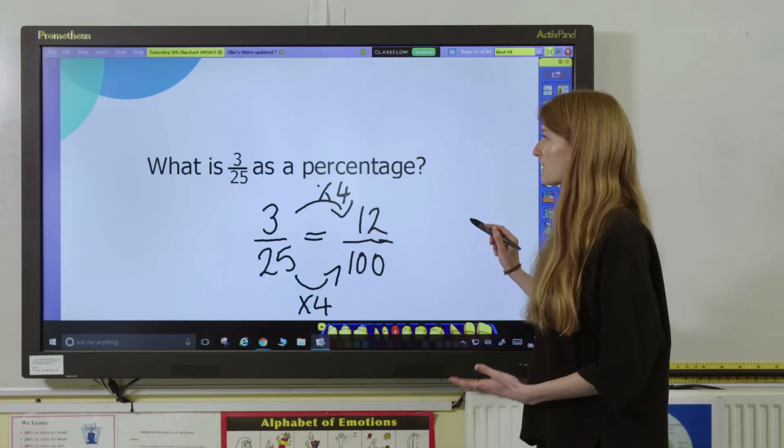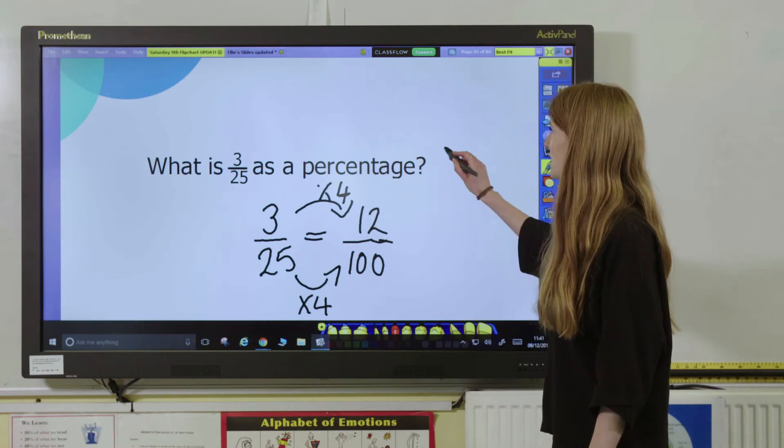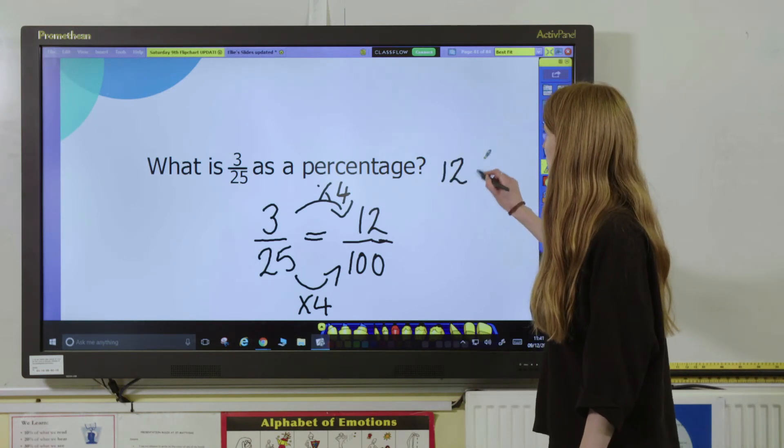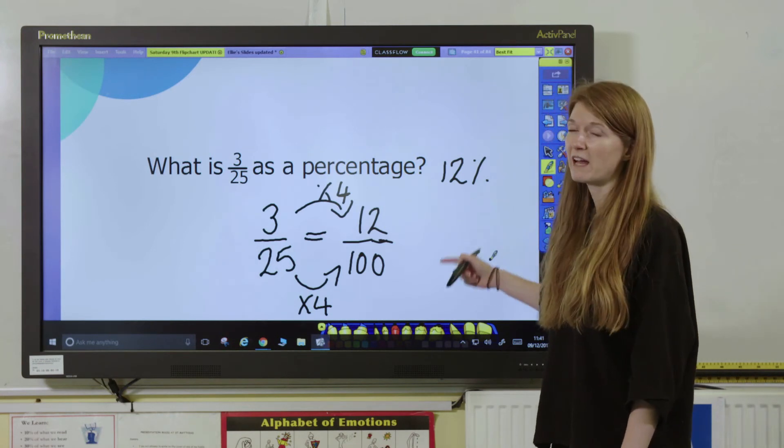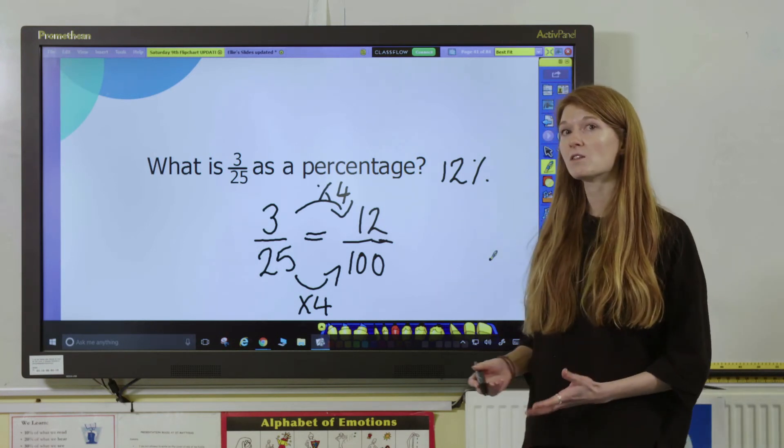And so, we can see that 3 25ths as a percentage is 12%, 12 out of 100. And that's one of the ways that you can convert fractions into percentages.